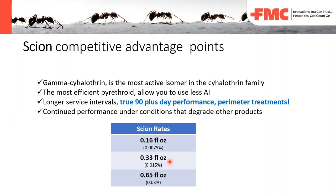Scion's active ingredient is gamma-cyhalothrin — the most active isomer in the cyhalothrin family. It allows the lowest rate of active ingredient while providing up to 90 days of true perimeter performance, even under harsh conditions. The low rate is 0.0075%, compared to something like Talstar at a typical 0.06%. The mid rate of Scion is 0.015% and the high rate is 0.03% — confirming it as the lowest use rate pyrethroid on the market, putting less active ingredient into the environment.